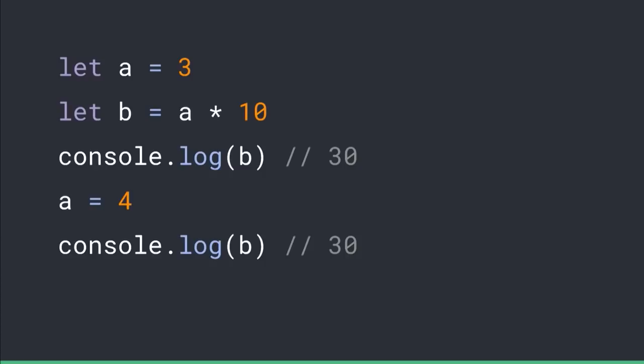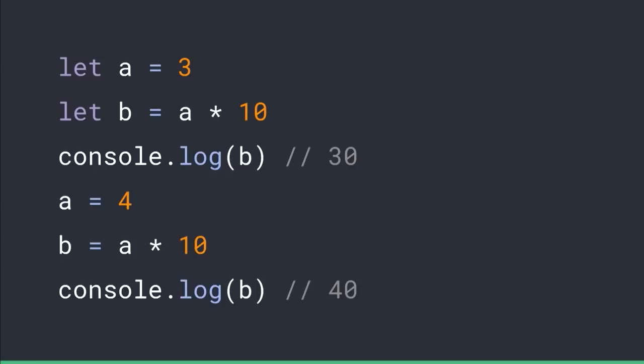And then you assign 'a' to four, and you log again, and it's out of sync. So you fix it, but now we have repetition. You have to remember to set b equals a times ten every time you change 'a', and this is obviously a potential source of bugs. You have to remember it all the time — if you make a typo, things just break.